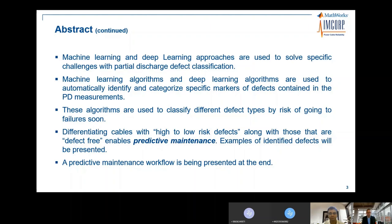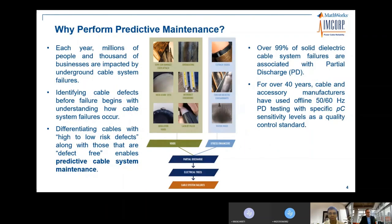Examples of identified defects will be presented, and the predictive maintenance workflow is presented at the end of this presentation. Each year millions of people and businesses are impacted by underground cable failures, and those failures can be predicted. Identifying cable defects before failure begins with differentiating cables with high to low risk defects, along with those that are defect-free — and the defect-free group is quite large.